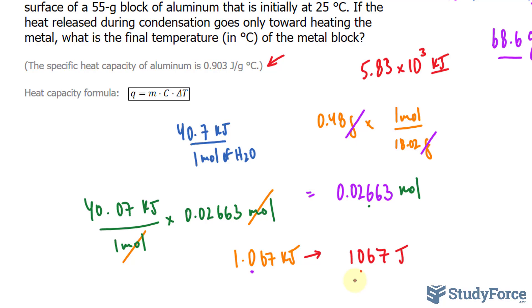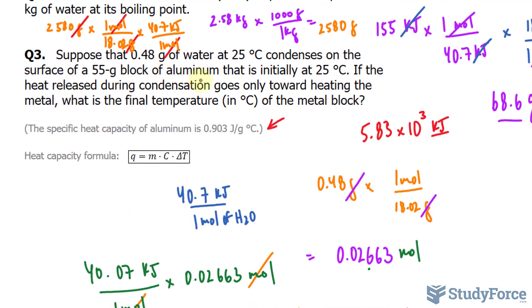So how do we relate this to the specific heat capacity? For that, we'll use this formula, and we've seen this formula before. It says that the energy is equal to the mass times the specific heat capacity times the change in temperature: q = m × c × ΔT. We know a lot of this information.